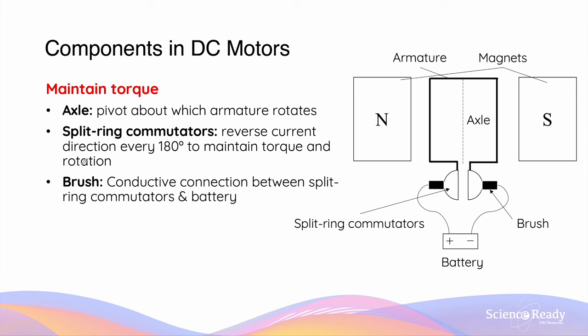We do this to maintain the direction of torque and rotation. Lastly, we have the brushes, which maintain the contact point between the DC power supply and the split ring commutators. This concludes the video on DC motors.